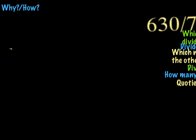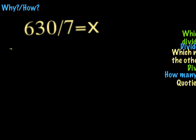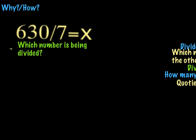So let's get started. We're going to take a look at this first problem, which is 630 divided by 7 equals x. So I want you to look at that problem and see if you can figure out which number is being divided. Hopefully you're thinking 630. And so that means that 630 is the dividend.